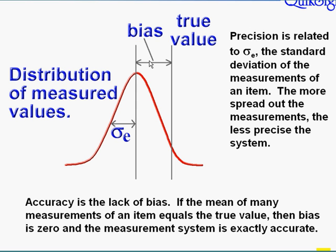Calibration and bias are not addressed by gauge R&R — those are fairly easy to correct problems. Where the action is, is in the standard deviation of the distribution of measurements. What I'm looking for is sigma E, the standard deviation of the random error in the measurement system. I would like that to be small compared with the total observed variation of my process, or if I'm doing a P-to-T ratio, I want it to be small compared with my tolerance. So gauge R&R is not going to help you with bias or accuracy — it's going to tell you a lot about sigma E, and that's really where the troublesome problems are and where you can get some advantage in improving your system.